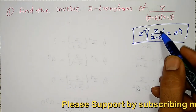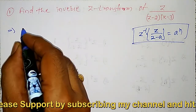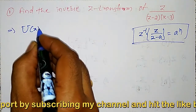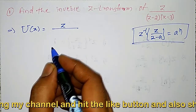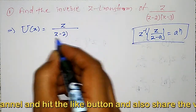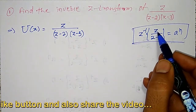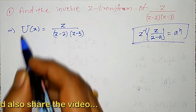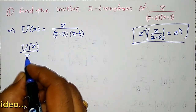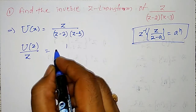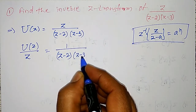Therefore, the numerator should contain z. Let me consider this as capital U of z equal to z divided by z minus 2 into z minus 3. As I want the numerator in the z form, let me divide both sides by z. Therefore, U of z divided by z equals 1 divided by z minus 2 into z minus 3.